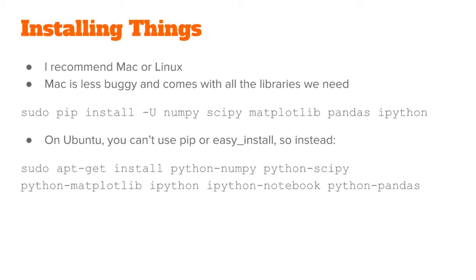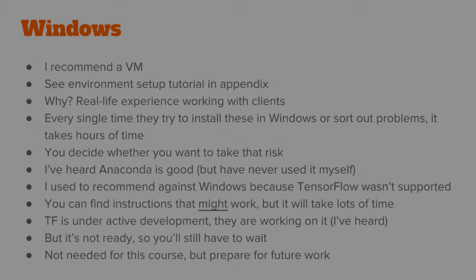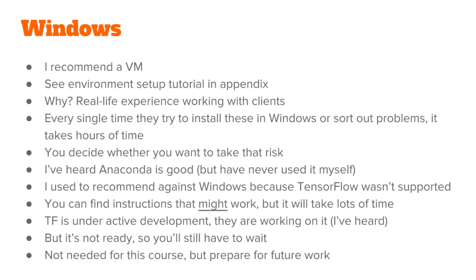On Ubuntu, the Linux distribution I recommend, you can't use pip or easy install to install the libraries we need. You'll need to use the aptitude package manager. You can do it all in one line with this command. So what do you do if you're on Windows? My recommendation is to use a virtual machine. I've added an environment setup tutorial in the appendix of this course where I walk you through the process of setting one up and installing everything.